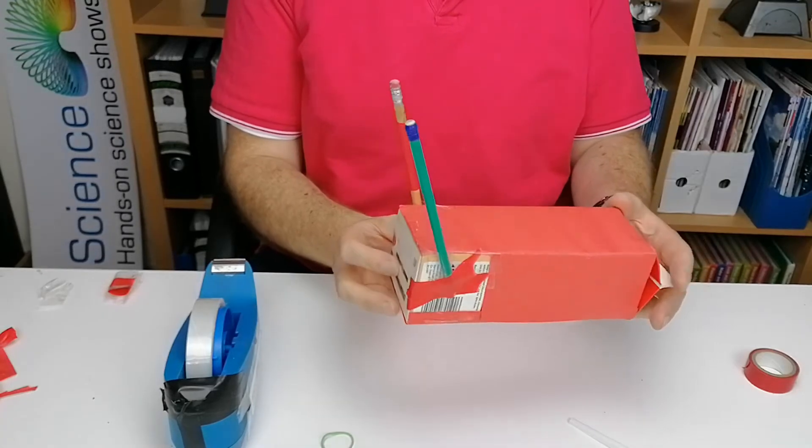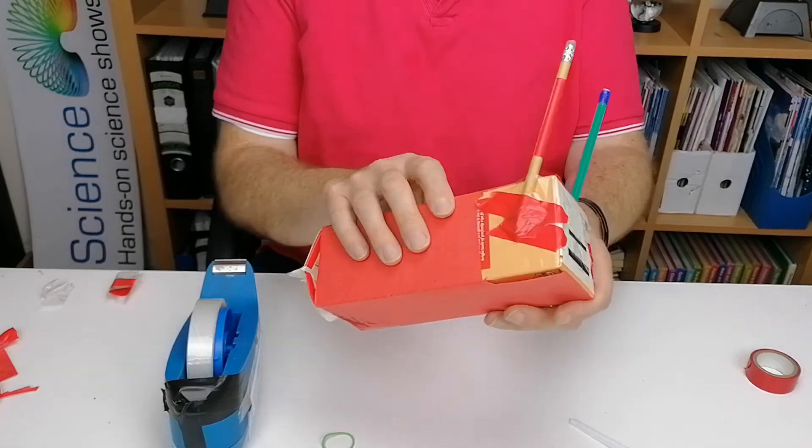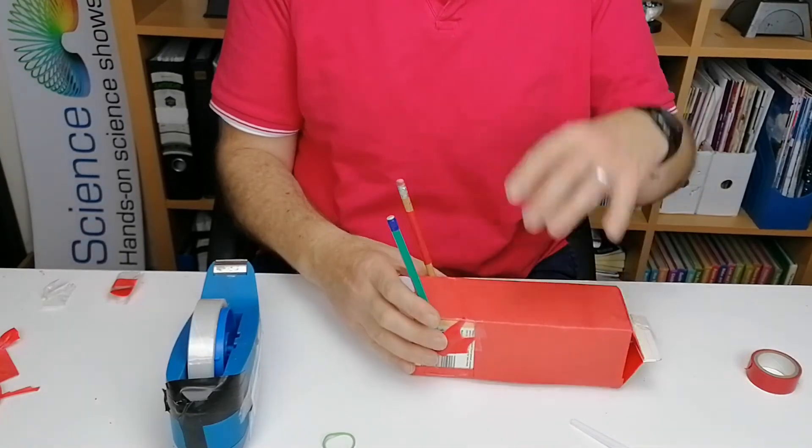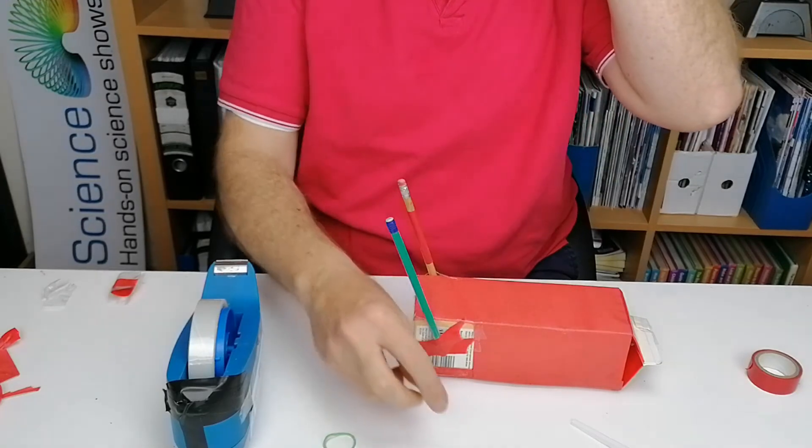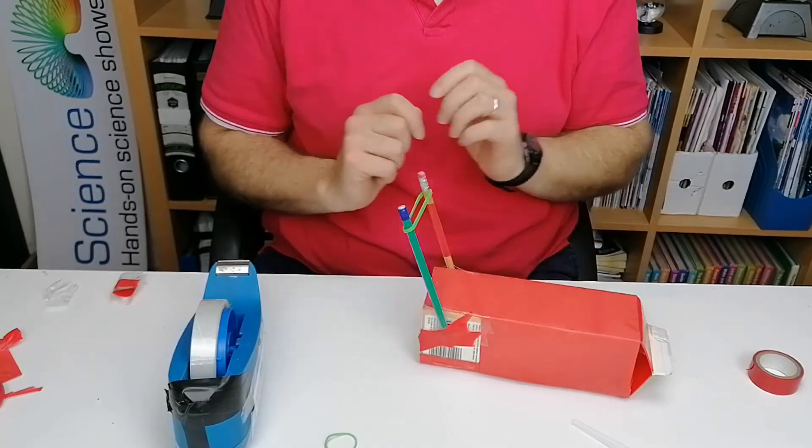Here we have the two pencils at the end of the milk carton. I've just put a little bit of insulation tape there as extra strength at the bottom, just so that they don't pull in at the top. And then you're going to take an elastic band and put it at the top of the two pencils.